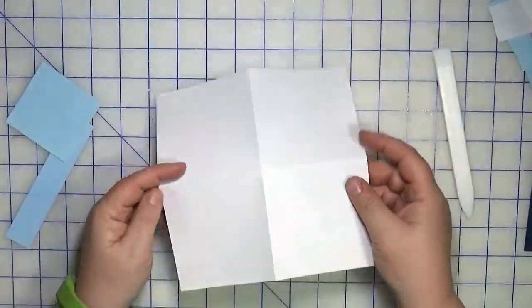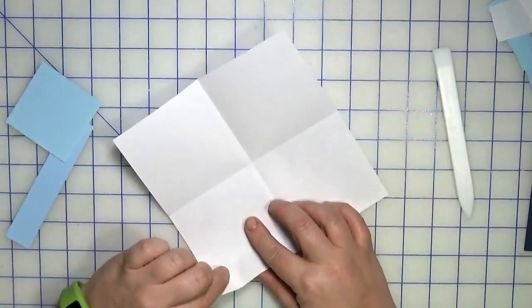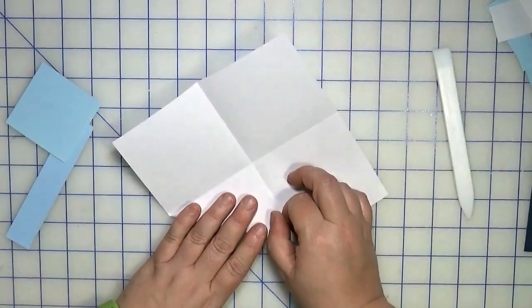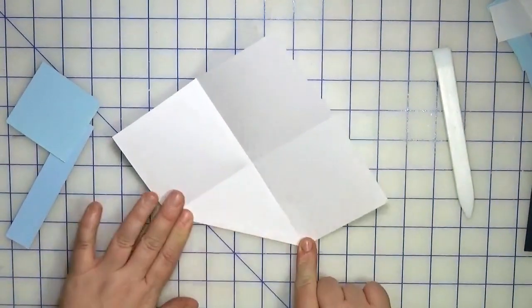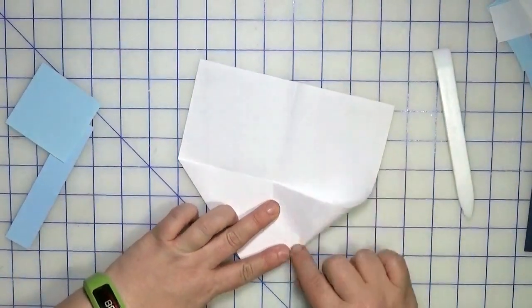Okay, so we now have something that looks like this. You're going to take all four corners and meet them into the middle. So you just go all the way around the square.